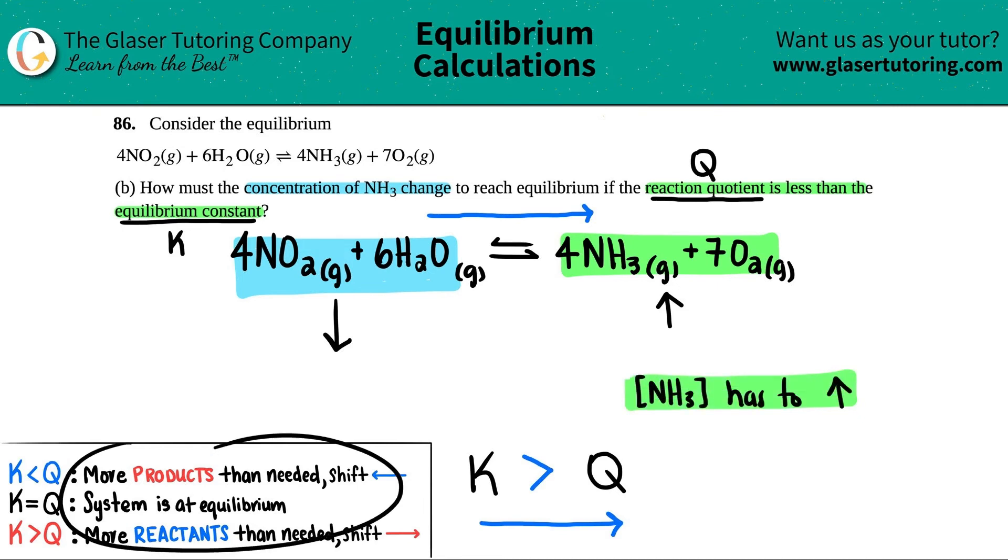Now over here, I did write out all of the rules for what happens when the K and the Q are compared with each other. We're at this stage of the game. If the K is greater than the Q, you have more reactants. You need to drop them down. So if you have more reactants than you need, you need to get rid of them. That's why you shift this way.